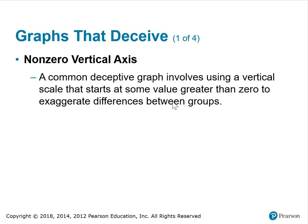Graphs that deceive. Non-zero vertical axis. A common deceptive graph involves using a vertical scale that starts at some value greater than zero to exaggerate differences between groups.